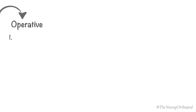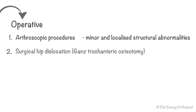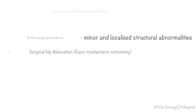Operative arthroscopic procedures are suitable only for minor and localized structural abnormalities. Isolated treatment of labral lesions without correcting the underlying bony pathology is a major cause of failure. Surgical dislocation of the hip is the preferred approach for treating femoroacetabular impingement.